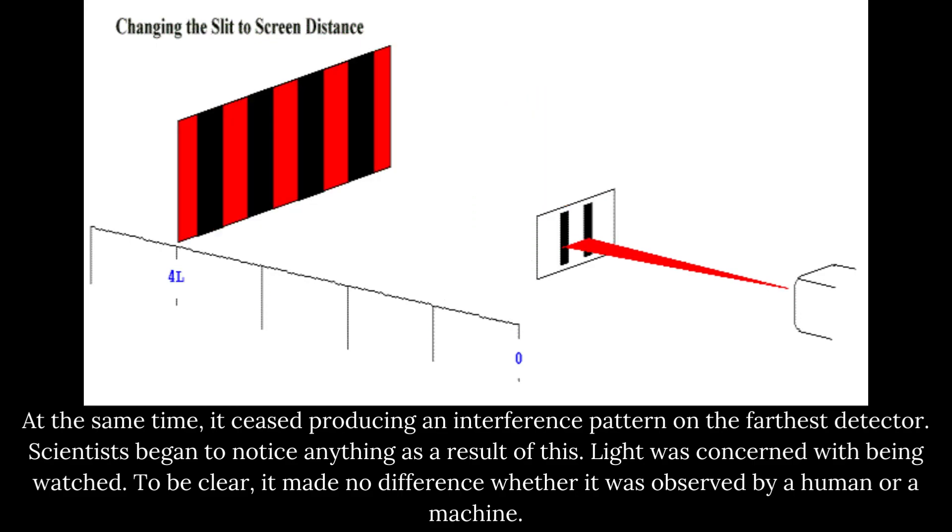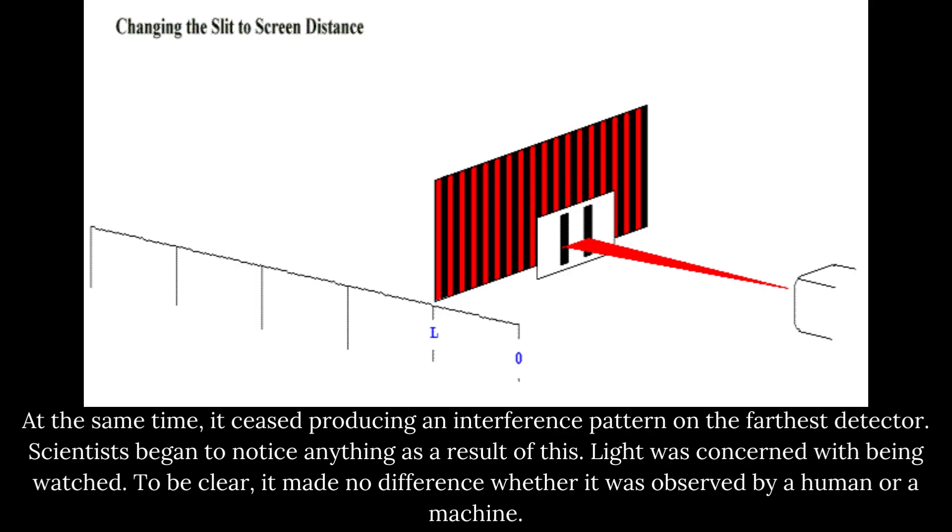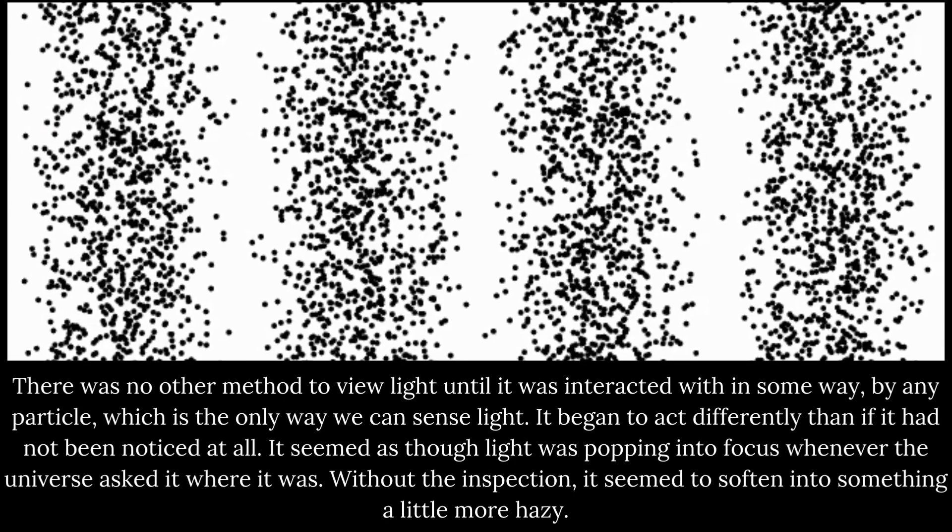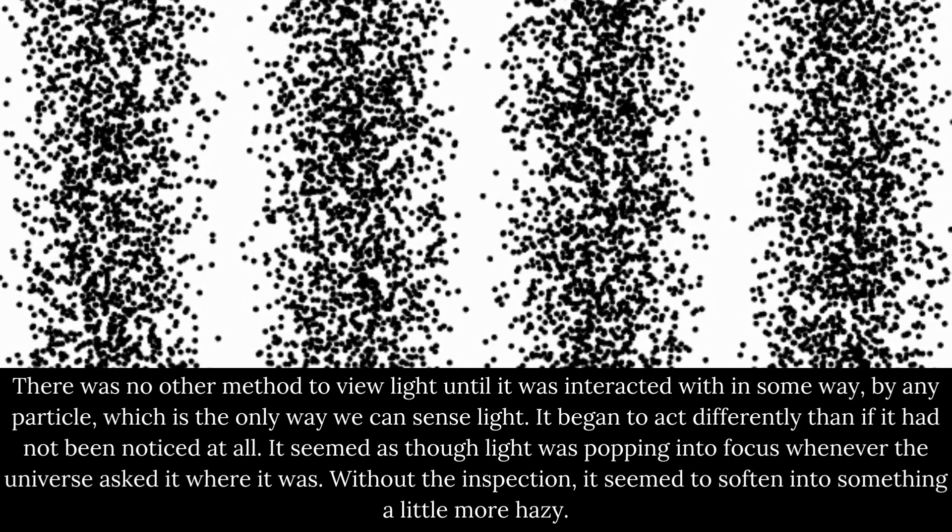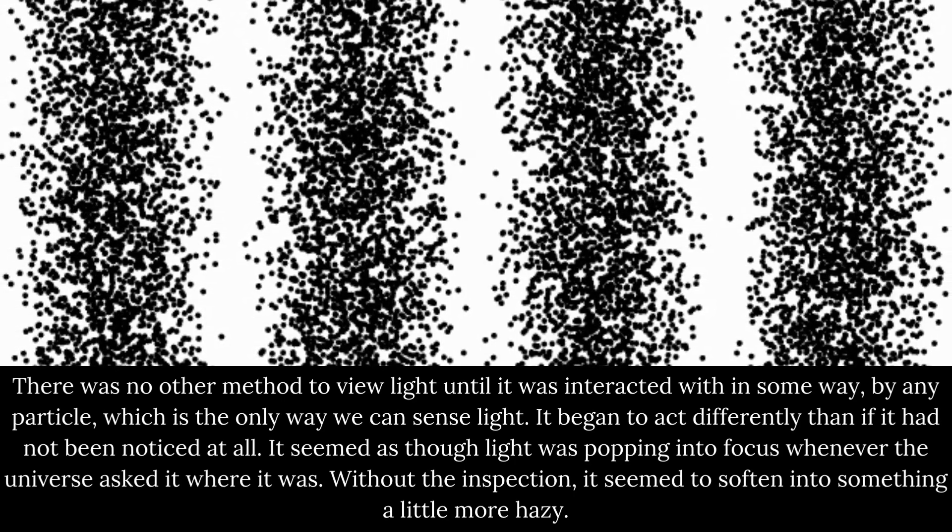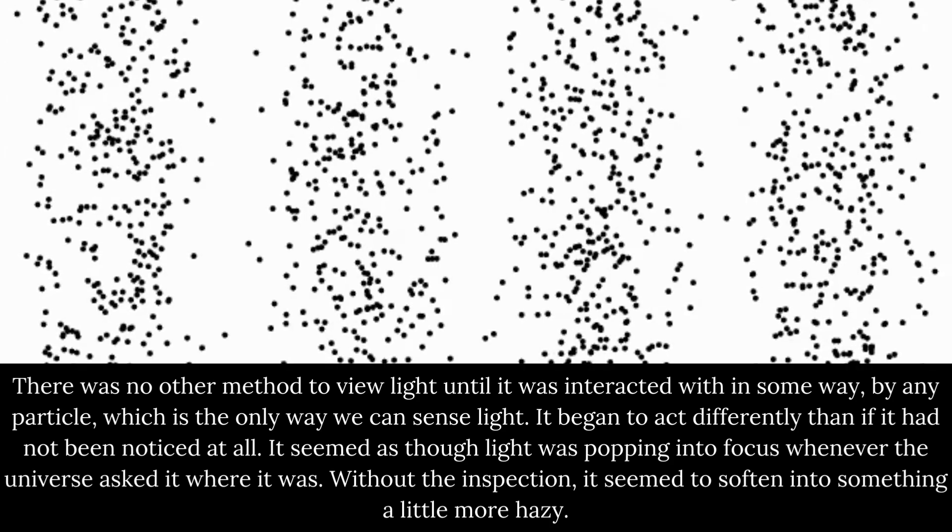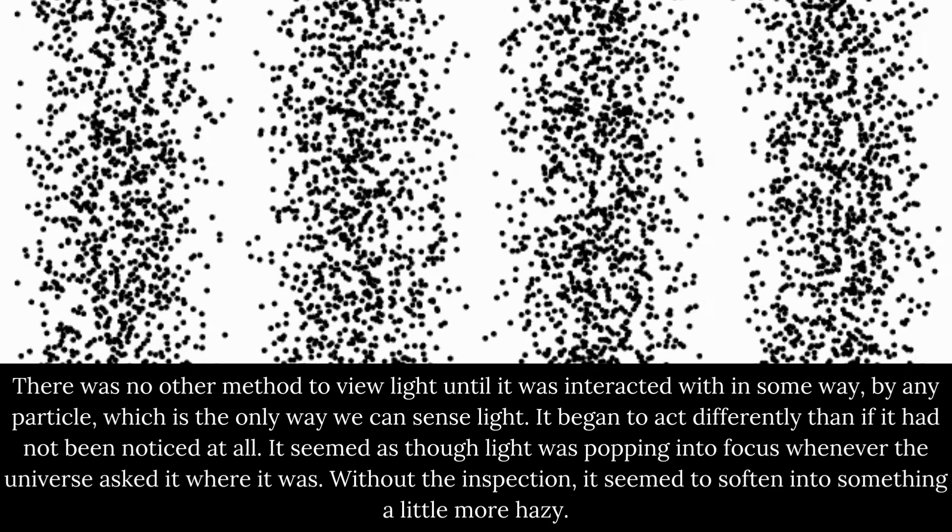To be clear, it made no difference whether it was observed by a human or a machine. There was no other method to view light until it was interacted with in some way, by any particle, which is the only way we can sense light. It began to act differently than if it had not been noticed at all.